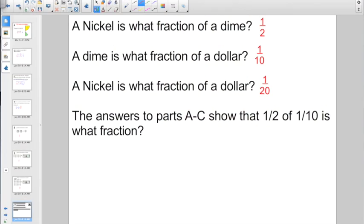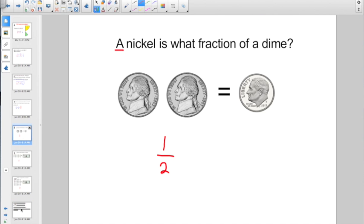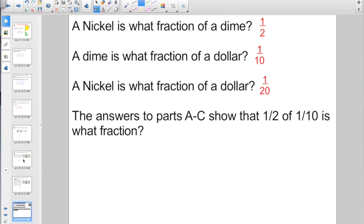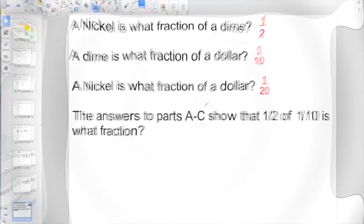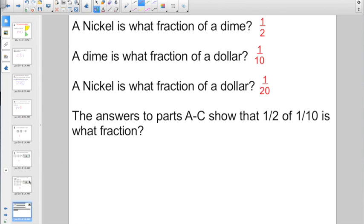Stay with me here, though, because I guarantee you're going to see a problem like this every day for about the remainder of the year. So check it out. A nickel is what fraction of a dime? We already did that one. That was a half. A dime is what fraction of a dollar? We did that one. We decided that was a tenth. And a nickel is what fraction of a dollar? We did that one. One twentieth. Check out this. This is what you're going to see every day from here on out. The answers to parts A through C show that one half of one tenth is what fraction? And if you don't see it already, you could simply write it out. One half of means to multiply.